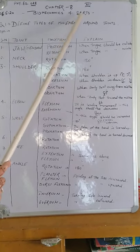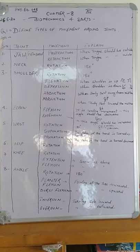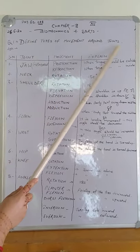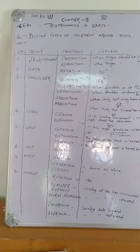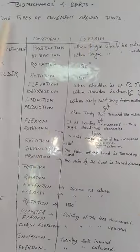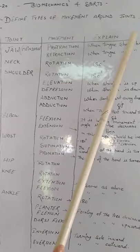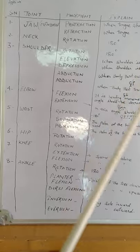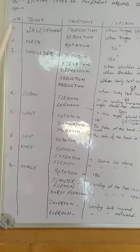Biomechanics and sports. Today is question number 1: Define types of movement around joints. Answer: Serial number, joint, movement and explain. You will draw this type of index and you will solve all things like this.